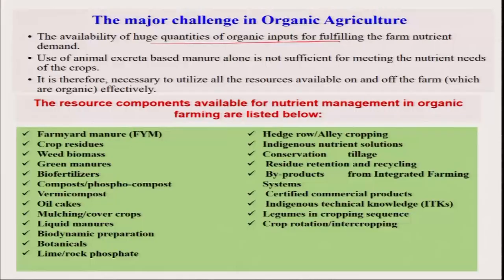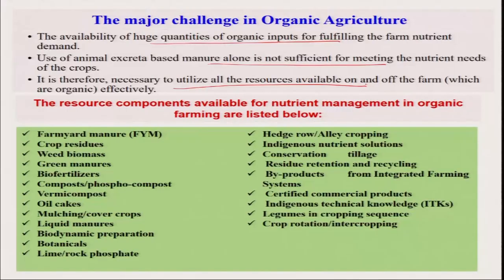Similarly, animal-based input is not sufficient alone — we have to also sometimes use different types of biofertilizers, maybe Azotobacter, Azospirillum, Rhizobium, phosphorus-solubilizing bacteria, and phosphorus-mobilizing microorganisms. We also promote biofertilizers. We can use different types of concentrated organic materials like neem oil cake, mustard cake, sesame cake, and groundnut cake. It is always necessary to utilize all the resources available either on the farm or off the farm.